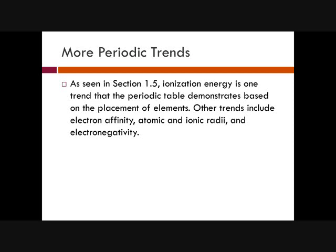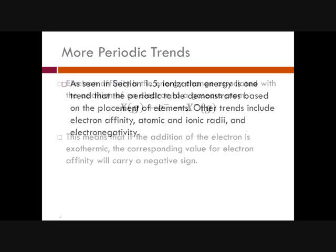As a generalization: fluorine has the highest ionization energy and francium has the lowest. As you go farther right on the periodic table, ionization energy gets higher; as you go up a column, ionization energy also gets higher. Other trends we're going to talk about are electron affinity, atomic and ionic radii, and electronegativity.